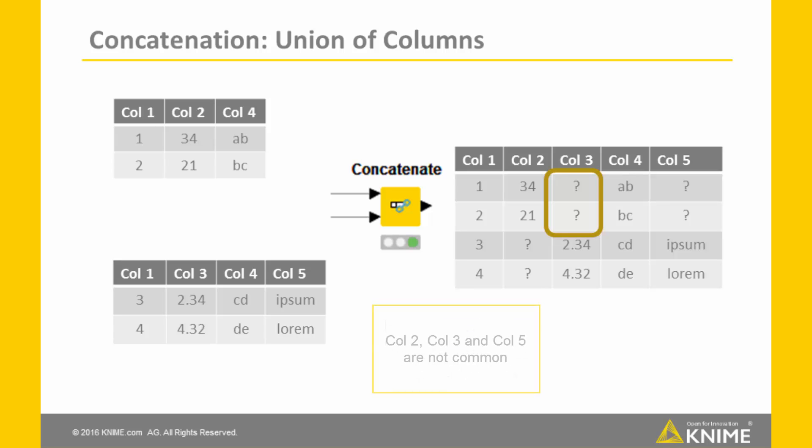In this case, column 2, column 3, and column 5 are not common, so when I place the two tables on top of each other, the missing parts here and here and here are filled with missing values.